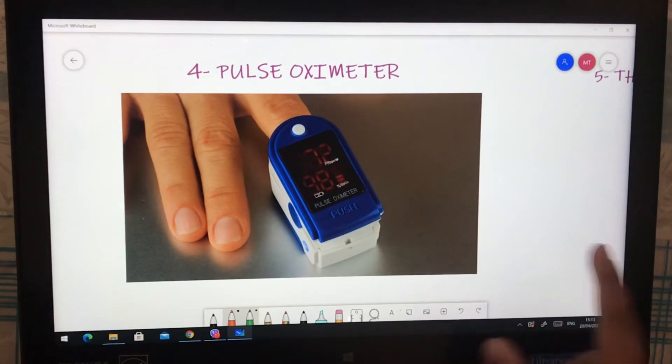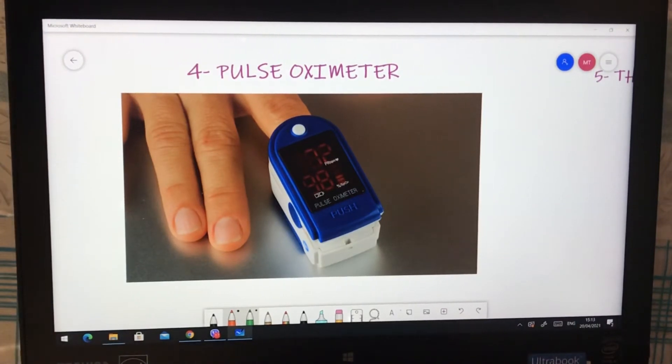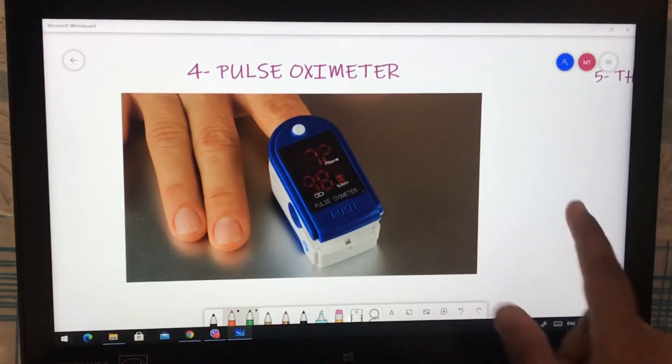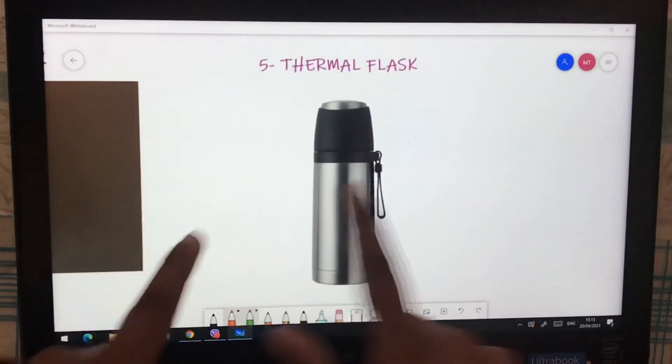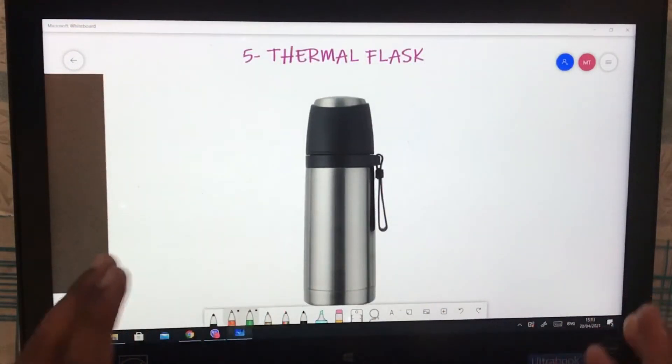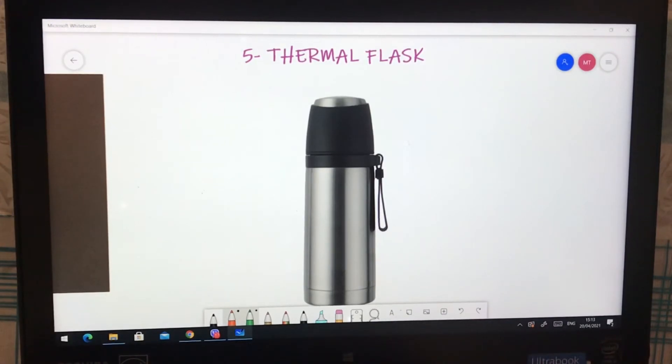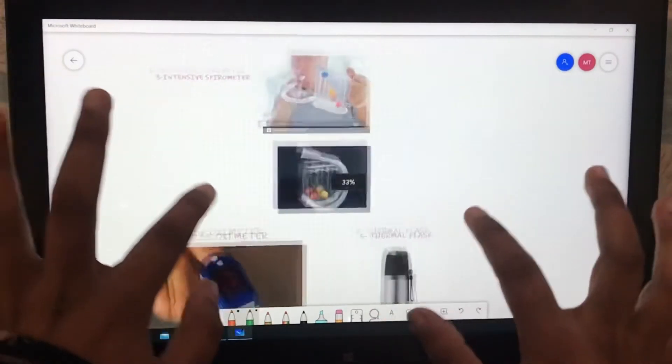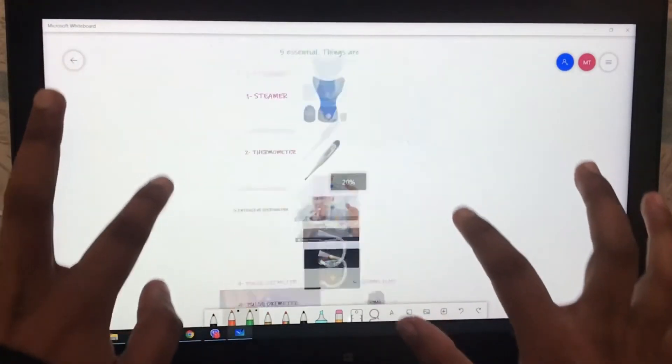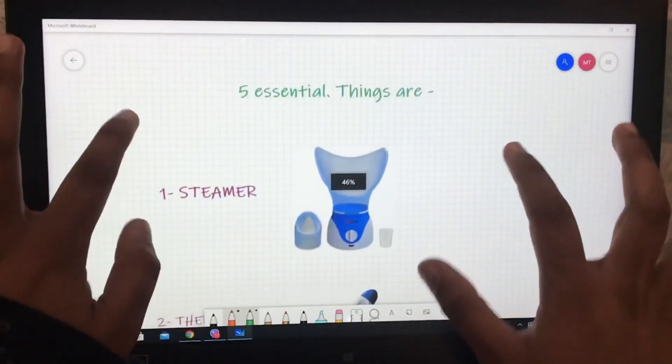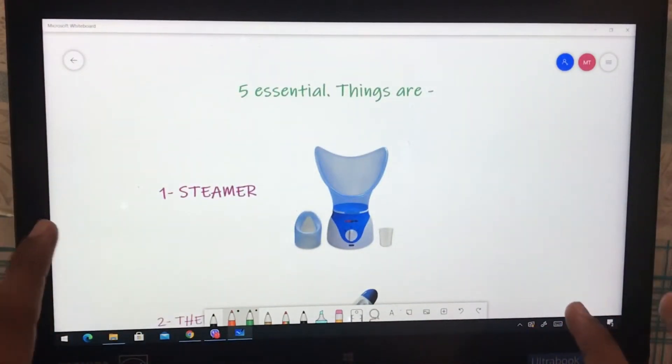The last one, but not the least, is a thermal flask. We all have this in our home. Keep warm water and always drink warm water. Avoid drinking cold drinks, avoid drinking cold water. I know it's summertime, but please keep drinking warm water as much as possible. These five things are essential if you don't want your situation to get worse. Please keep these five things at your home already.